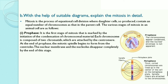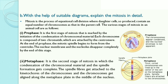Second phase — metaphase: it is the second stage of mitosis in which condensation of chromosomal material and spindle formation is complete. The spindle fibers get attached to the kinetochores of the chromosomes, and the chromosomes get aligned along the metaphase plate in the middle of the nucleus.